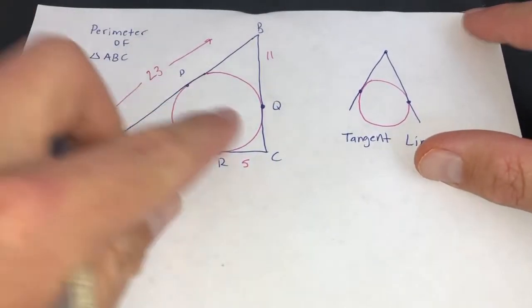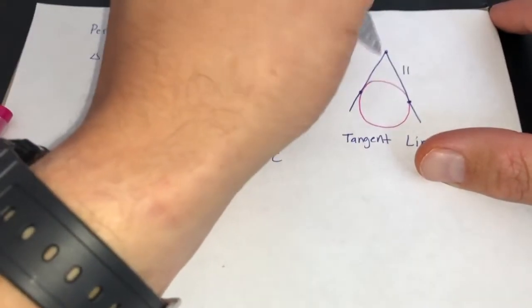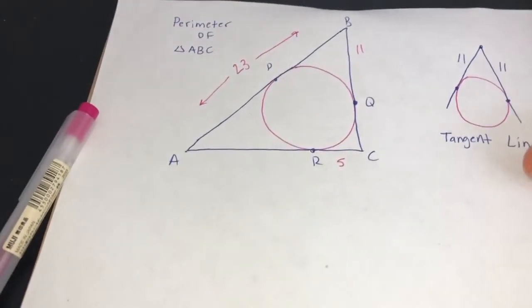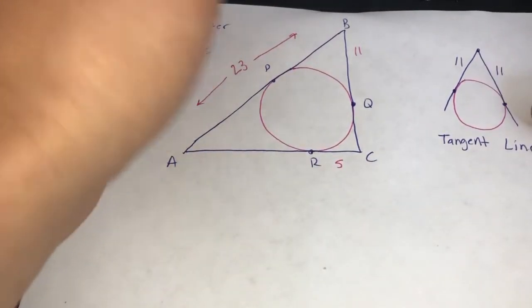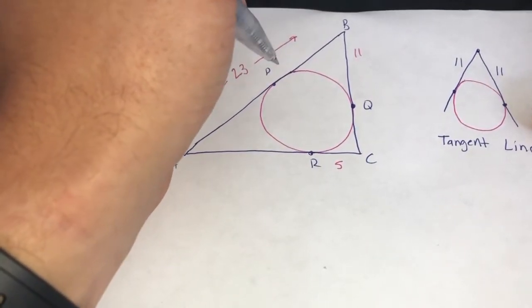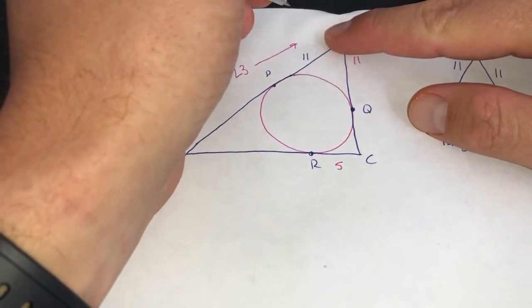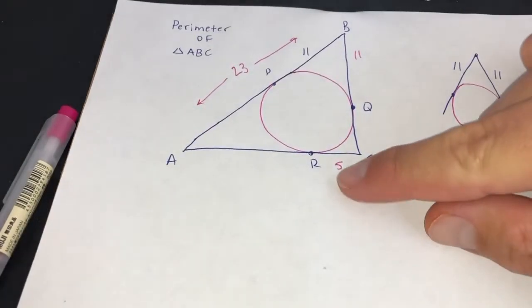So here, if this is 11, this also has to be 11. So we'll take that into account for this shape. If this part's 11 and this part has to be 11.